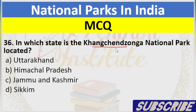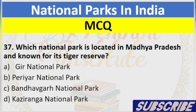Question 36: In which state is the Khangchendzonga National Park located? A. Uttarakhand, B. Himachal Pradesh, C. Jammu and Kashmir, D. Sikkim. Answer: D. Sikkim.